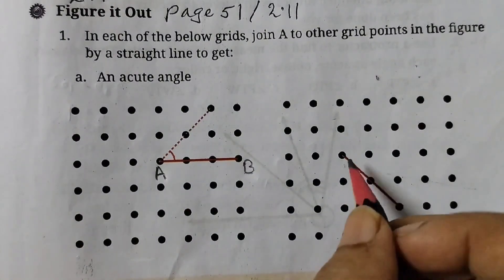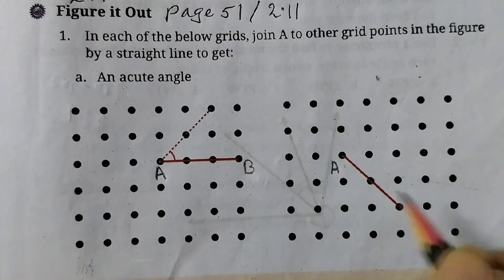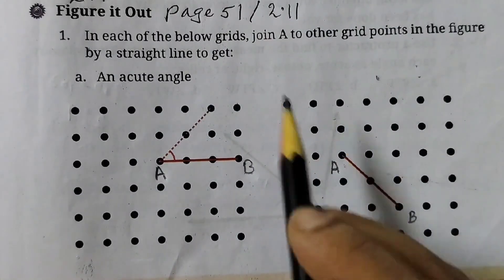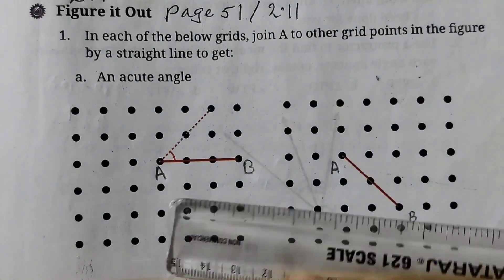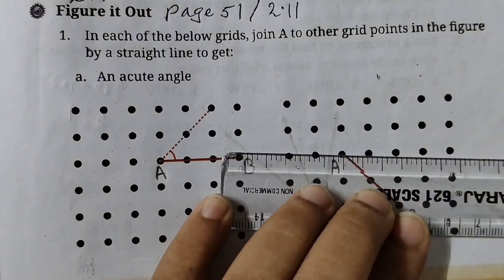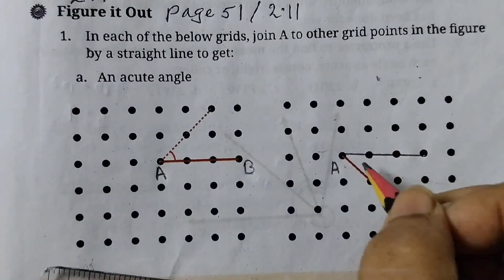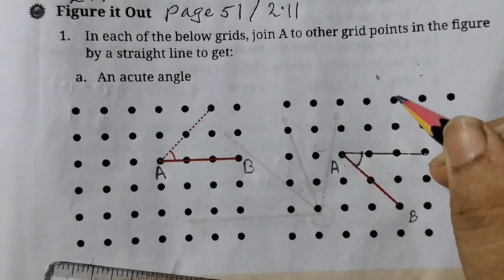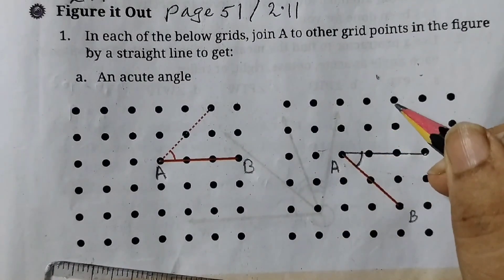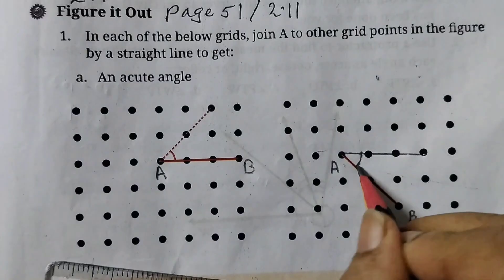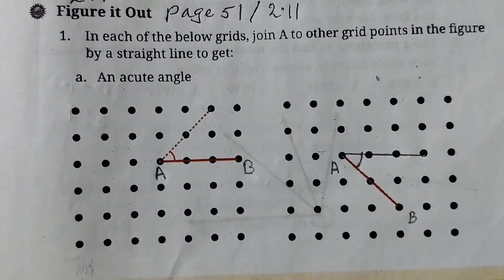An acute angle is done, and now this one. First label it - this is A and B, and then we have to join A. So acute angle would be like this, and then you make a curve like this. If you draw like this, this would be a 90 degree angle. So acute angle is smaller than this, so it would be like this.